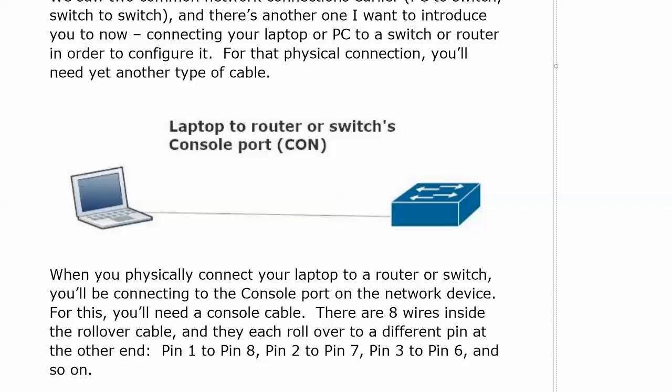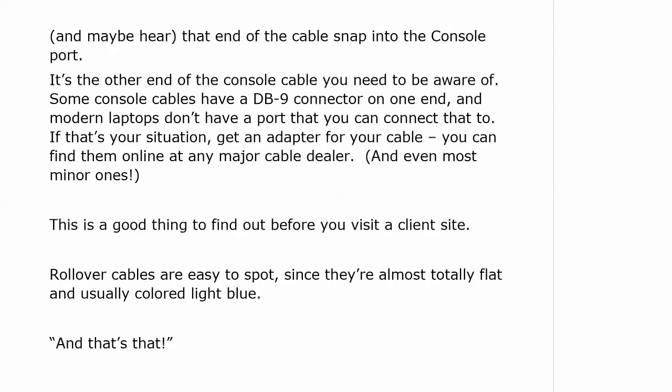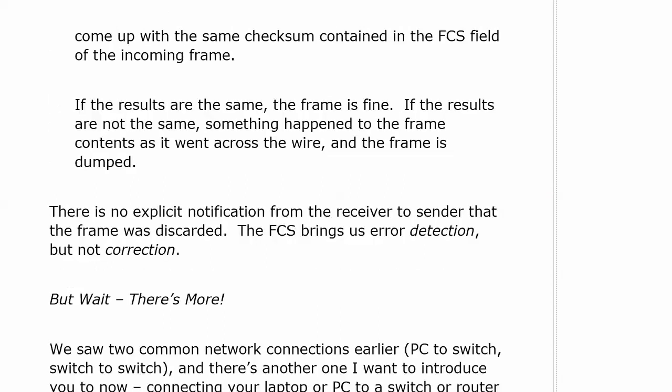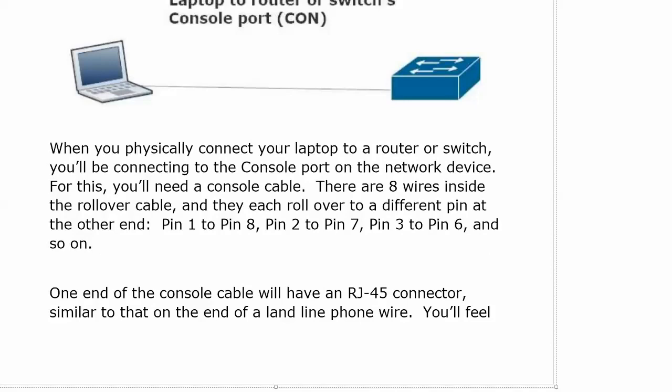There are eight wires inside a rollover cable. They each roll over to a different pin at the other end: one to eight, two to seven, three to six, and so on. One end of the console cable has an RJ45 connector, similar to the one on the end of a landline phone wire. You hear it snap when it's connected — that's the kind of snap you'll feel when you snap an RJ45 connector into place.